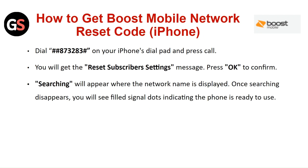How to get the Boost Mobile Network Reset Code for iPhone? Dial #873283# on your iPhone's dial pad and press call. You will get the reset subscriber settings message. Press OK to confirm.